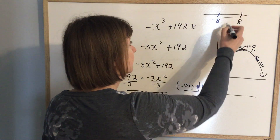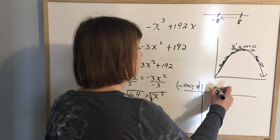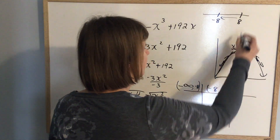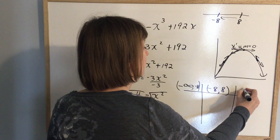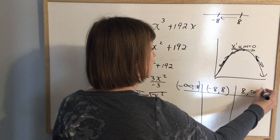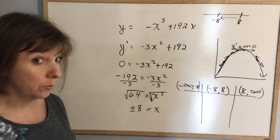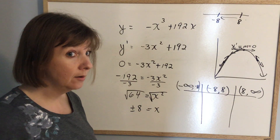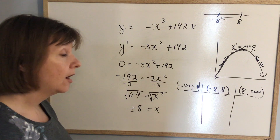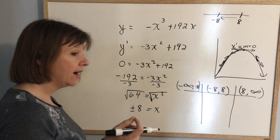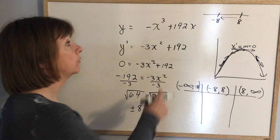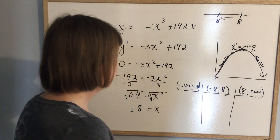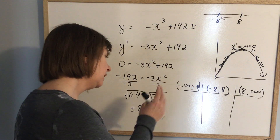We have three intervals: negative infinity to negative 8, negative 8 to 8, and 8 to infinity. What I'm going to do is pick any number I want in each of those sections and put it back into the derivative — not back into the original equation; that's a mistake people make. Put it back into the derivative.